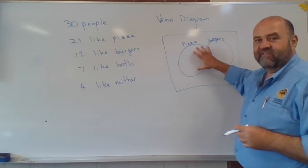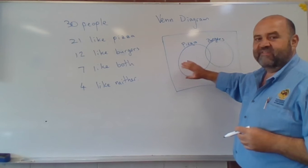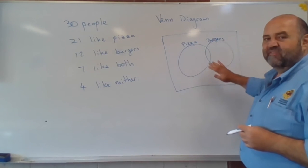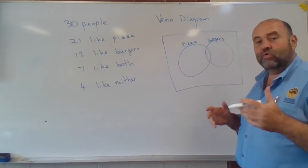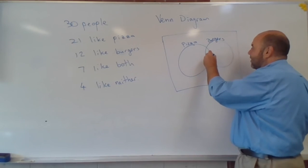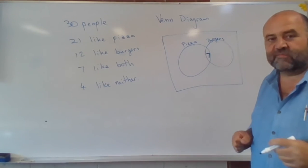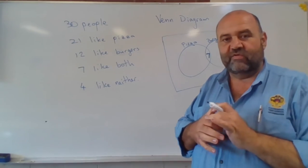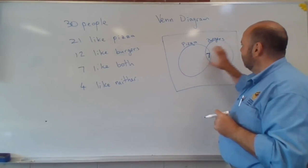So our Venn diagram, these are all the pizza likers. Everyone in this circle likes pizza. Everyone in this circle likes burgers. There are seven people who like both, so those seven go in there in the little intersection between the two. So these seven people like both.